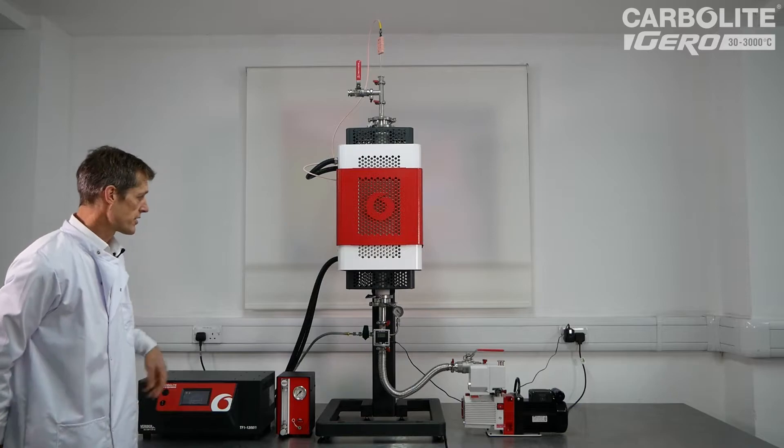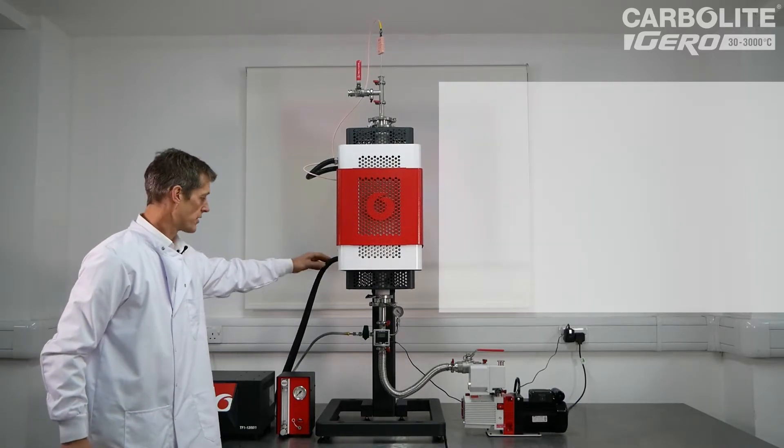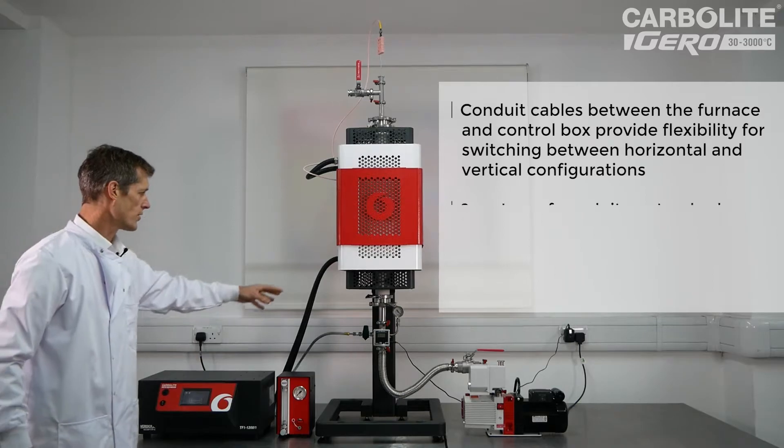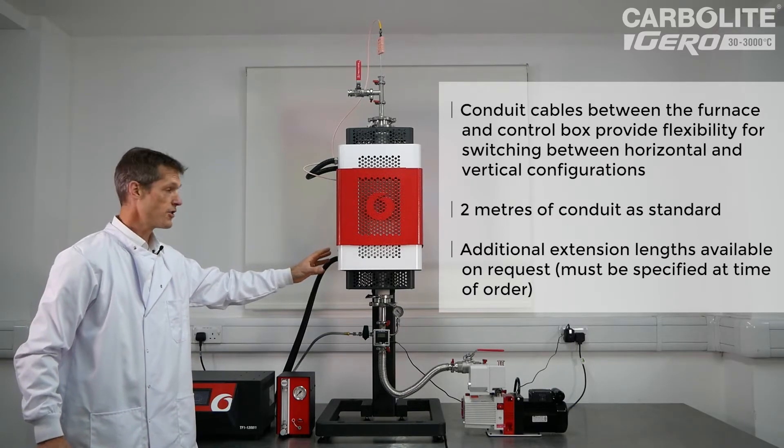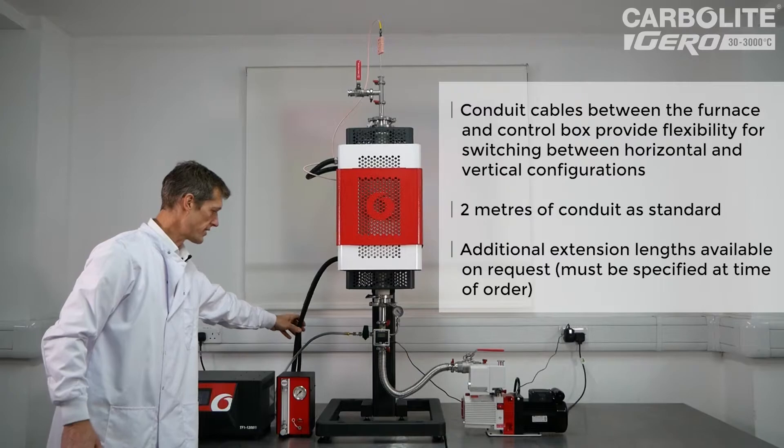This furnace always comes with two metres of conduit to connect it to the control box, so that allows various configurations, including this vertical one, to be easily set up.